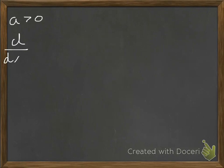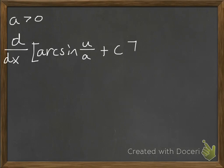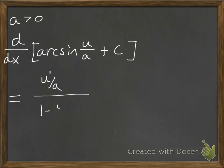A is going to be some constant greater than zero. We're going to take the derivative of arc sine of U over A, where U is a differentiable function of X. Using the chain rule, the derivative of arc sine is going to be U prime over A, divided by the square root of 1 minus (U over A) squared.